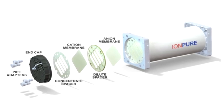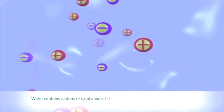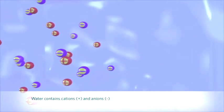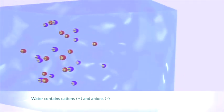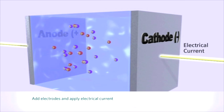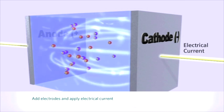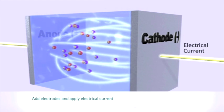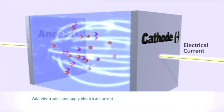To understand how the patented IonPure CEDI technology actually works, let's go down to the molecular level and take a look at some water containing ions. Water contains positively charged cations, represented by plus signs, and negatively charged anions, represented by minus signs. When a pair of electrodes is inserted and an electrical current applied, the electric field drives the cations in the direction of the cathode and at the same time drives the anions in the opposite direction toward the anode.